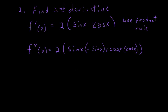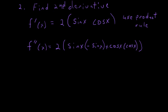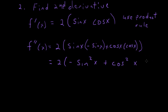We can simplify this a little bit. This equals 2 times negative sine squared of x — since sine x times negative sine x is negative sine squared x — plus cosine squared of x. We've completed step 2 and found the second derivative.